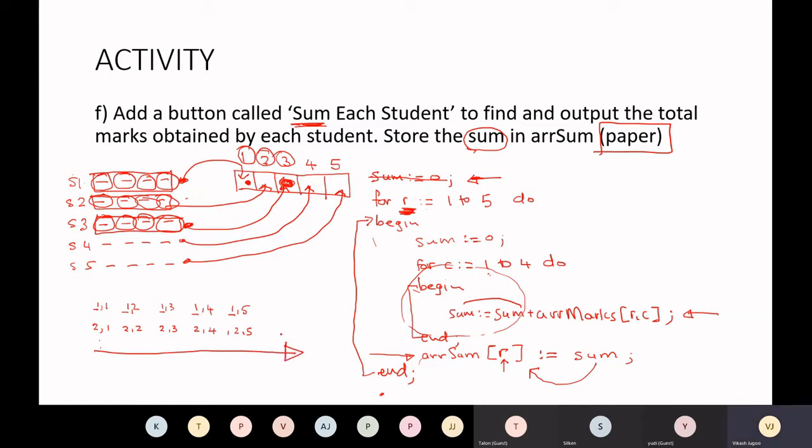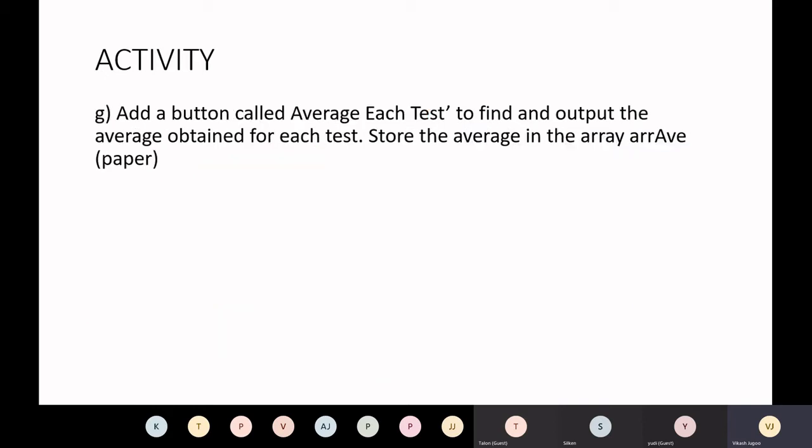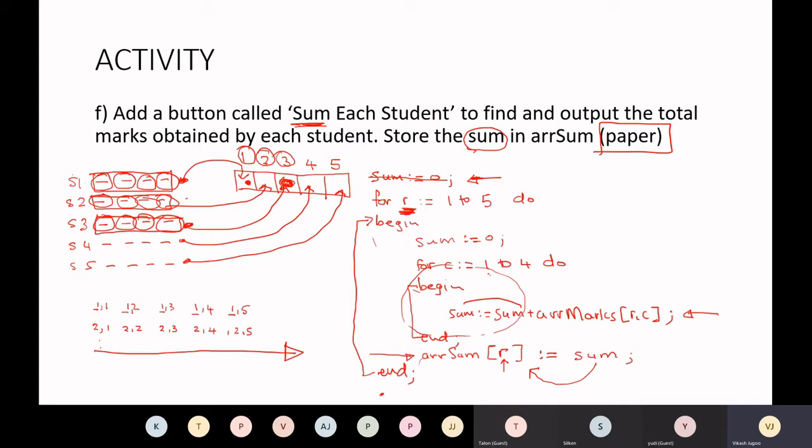Let's look at the next example and let's see what we expected to do there. I now want to find, I need a button, and I want to find the average of each test. Find an output, the average obtained for each test. Remember, we had a 1D array called ARRM. Now they are asking us, this is our test. So I need to now come down the rows. I'm no longer going across because I'm finding the average of the test.